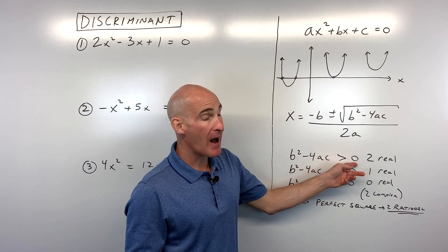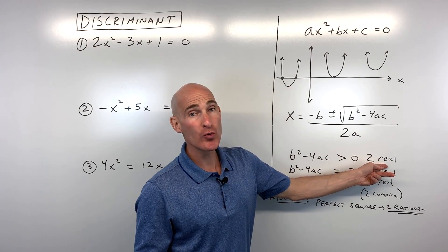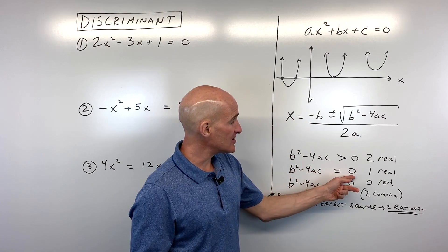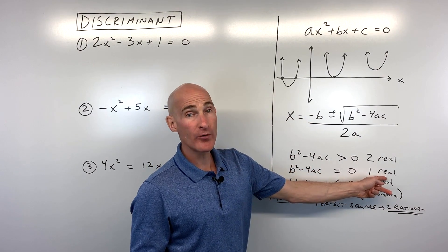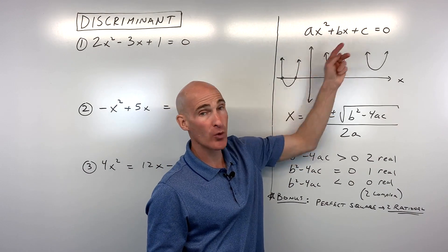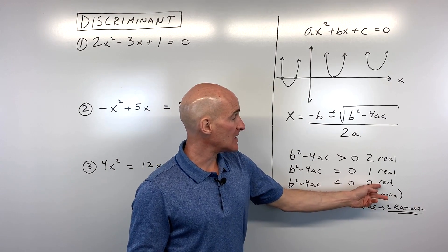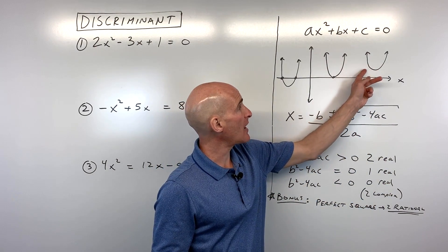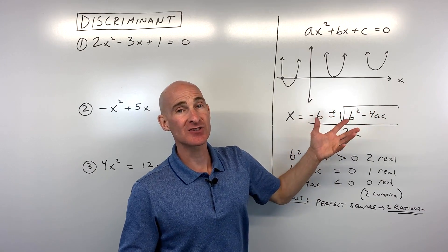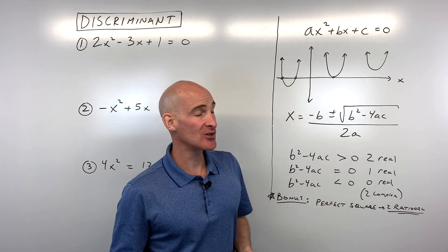If the discriminant comes out to a positive number — meaning it's greater than zero — then there are two real solutions, meaning the parabola crosses the x-axis at two points. If it's equal to zero, then there's one real solution, meaning it crosses right at the vertex. And if it's less than zero, meaning it comes out to a negative number, then we get zero real solutions — the parabola either opens up or opens down but doesn't cross the x-axis, and you actually get two complex, or two imaginary, solutions.